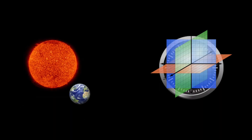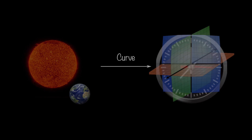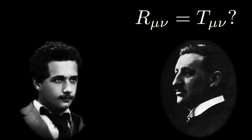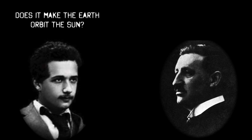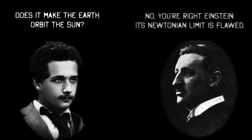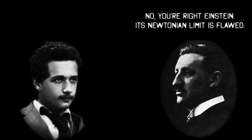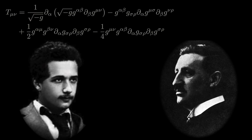In 1912, Einstein came to Zurich to work with the mathematician Marcel Grossmann on an equation through which energy tells space-time how to curve. Early on, Grossmann proposed an equation, but both he and Einstein ended up rejecting it, because it didn't seem to explain the planetary motions that Newton did. Instead, Einstein cooked up his own equation.